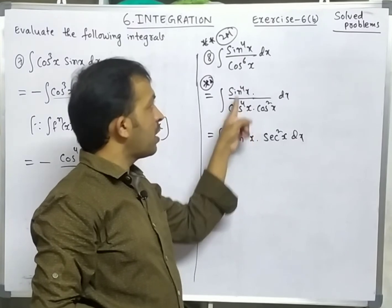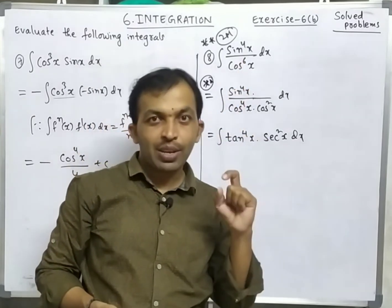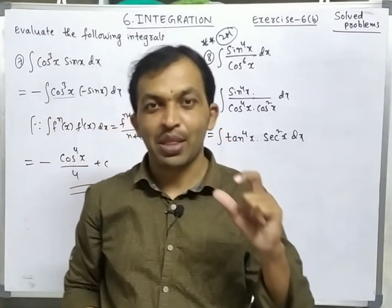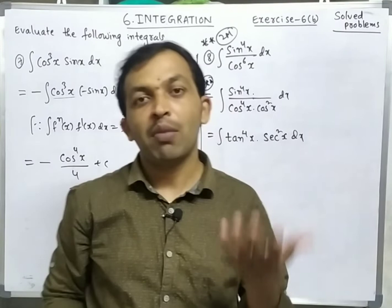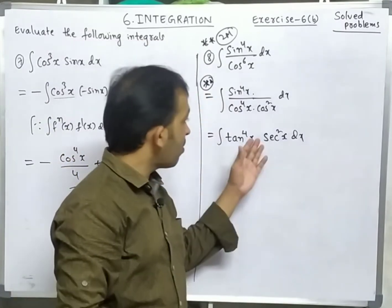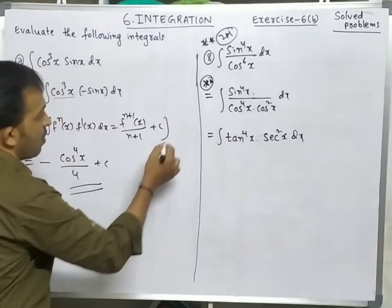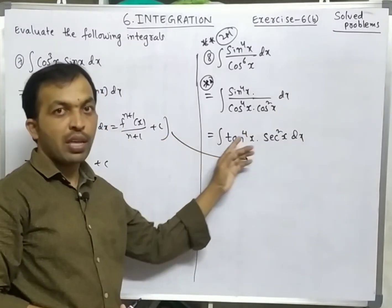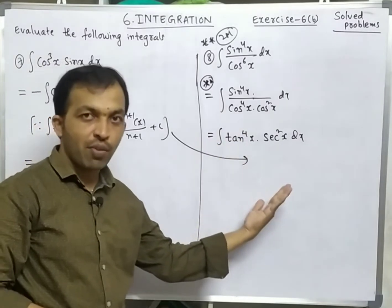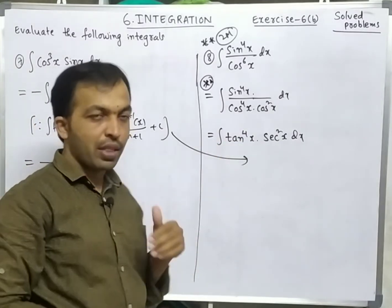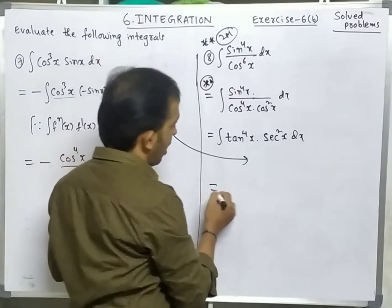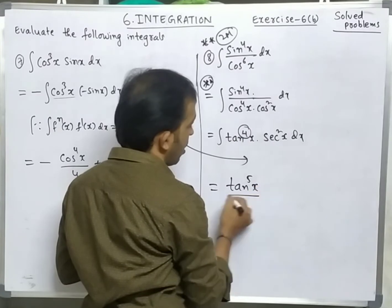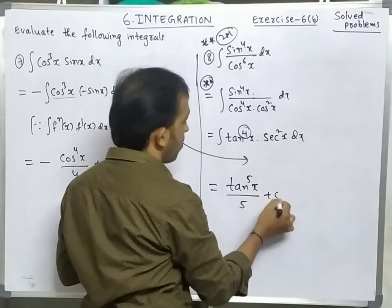This conversion is very important. sin⁴x/cos⁴x = tan⁴x, and 1/cos²x = sec²x. Now apply the formula: f(x)ⁿ · f'(x) — here tan⁴x is f(x)ⁿ, and immediately we have the derivative of tan x which is sec²x. So the answer is tan⁵x/5 + c. Write the formula.